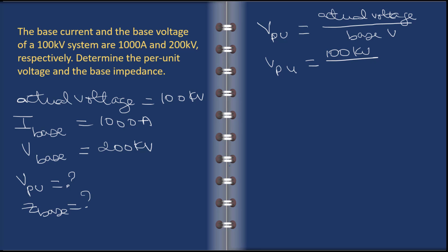And divided by base voltage, what's base voltage? It's 200 kV, so you can easily see here that it's 0.5 per unit.